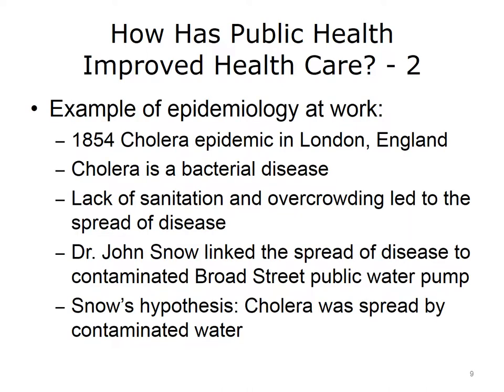Here is an example of epidemiology at work. In 1854, an epidemic of cholera ravaged London, England. Cholera is a bacterial disease spread by contamination of food or water, and lack of sanitation and overcrowding were important factors. Dr. John Snow, a physician, linked the spread of disease to a contaminated public water pump on Broad Street. Snow hypothesized that the disease was spread by contaminated water and used statistics to connect the quality of water to the number of cases of cholera.